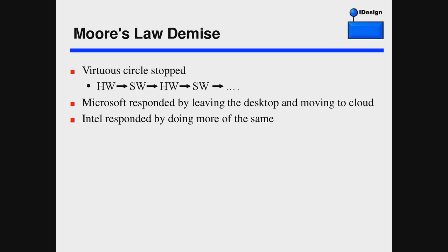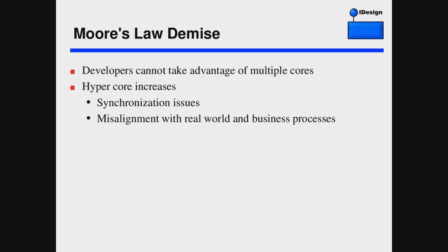Intel responded by simply doing more of the same — four-core CPUs, eight-core CPUs, even working on an 80-core CPU. But multiple cores are not the answer. Most developers have a hard time even with multiple threading on a single CPU. Hyper-cores increase the chance for conflict, meaning more synchronization issues. But the real issue is that simply throwing more CPUs and threads at software increases the misalignment with the real world and business processes.